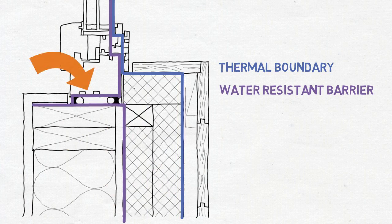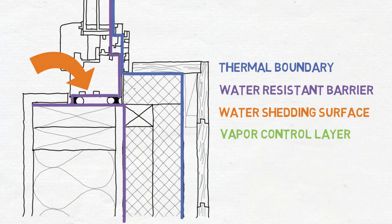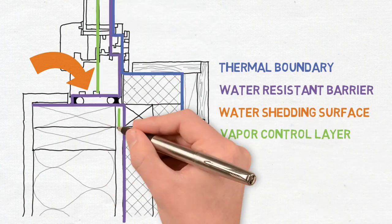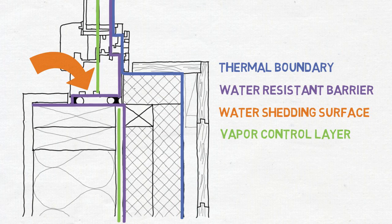The part between the gaskets is a water shedding surface. The vapor control layer is the window and the plywood sheeting between the wood framed wall and exterior insulation.